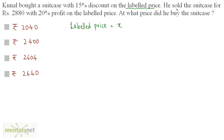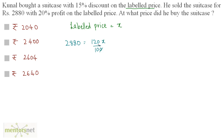He sold the suitcase for Rs. 2880 with a 20% profit on the labeled price. So 2880 is equal to a 20% increase on the labeled price. So, x plus 20 upon 100x — basically 120 upon 100x. Cancelling out the zeros, we get x equals 2880 times 10 divided by 12. Since 12 times 240 is 2880, x equals 2400.